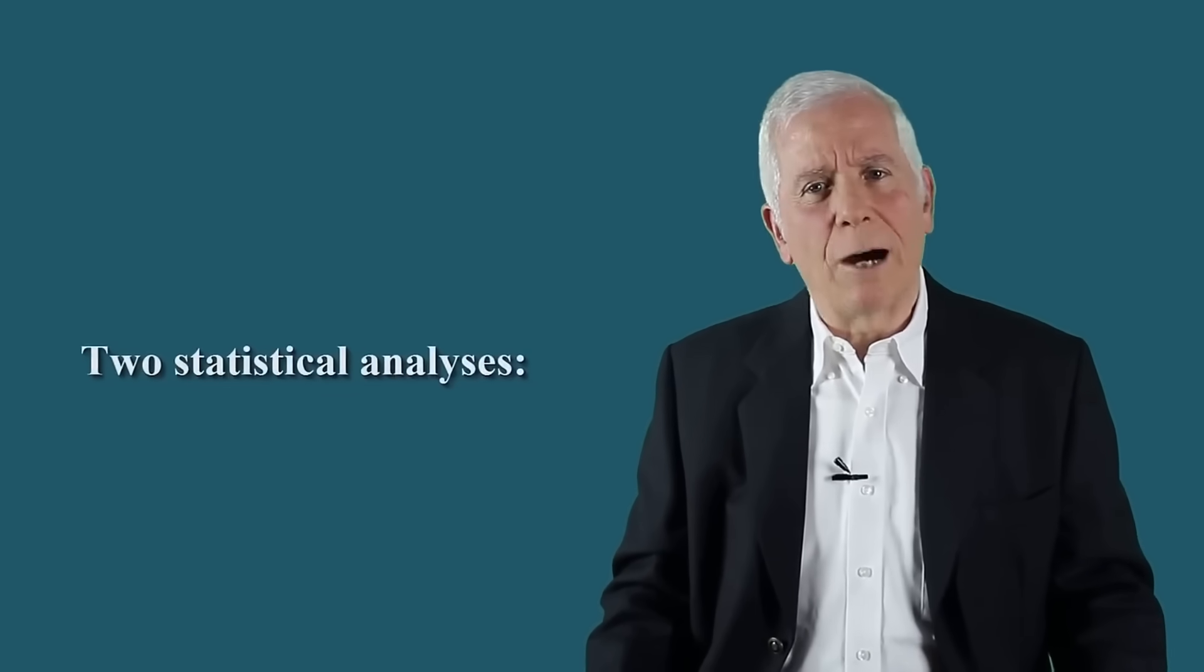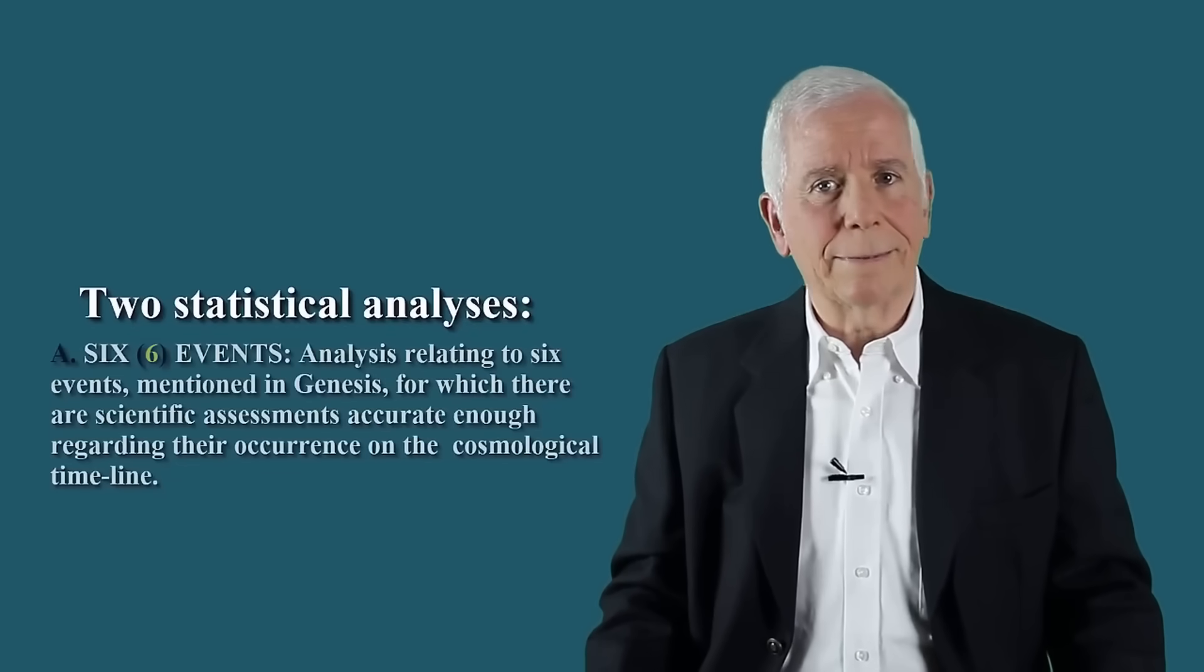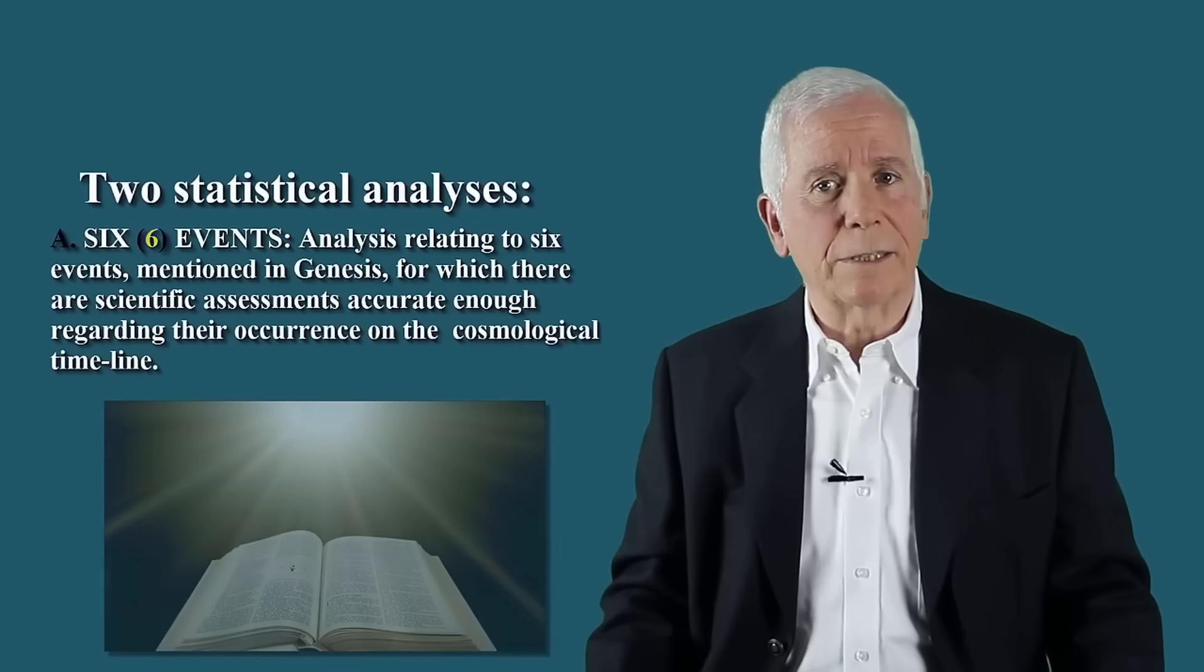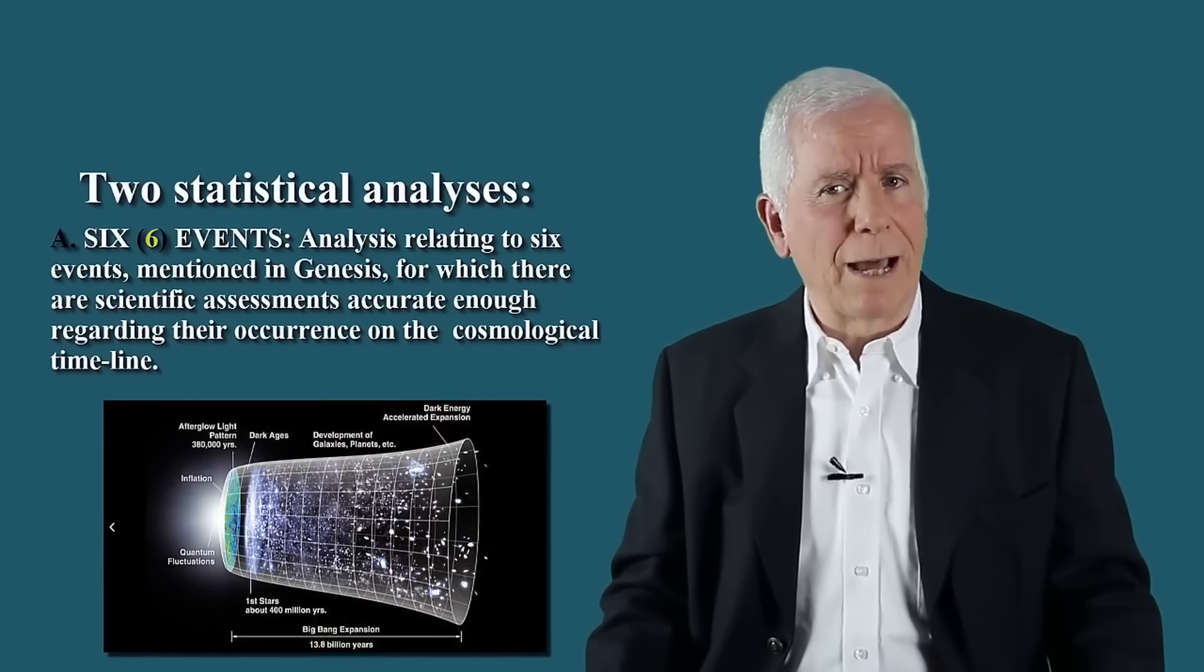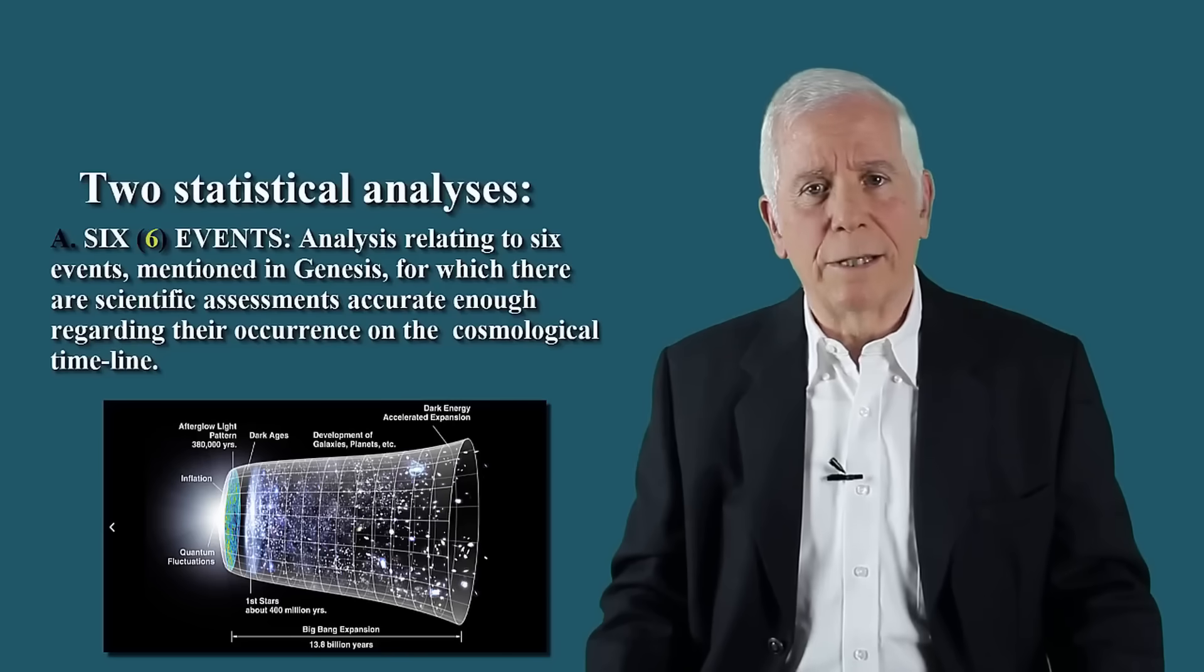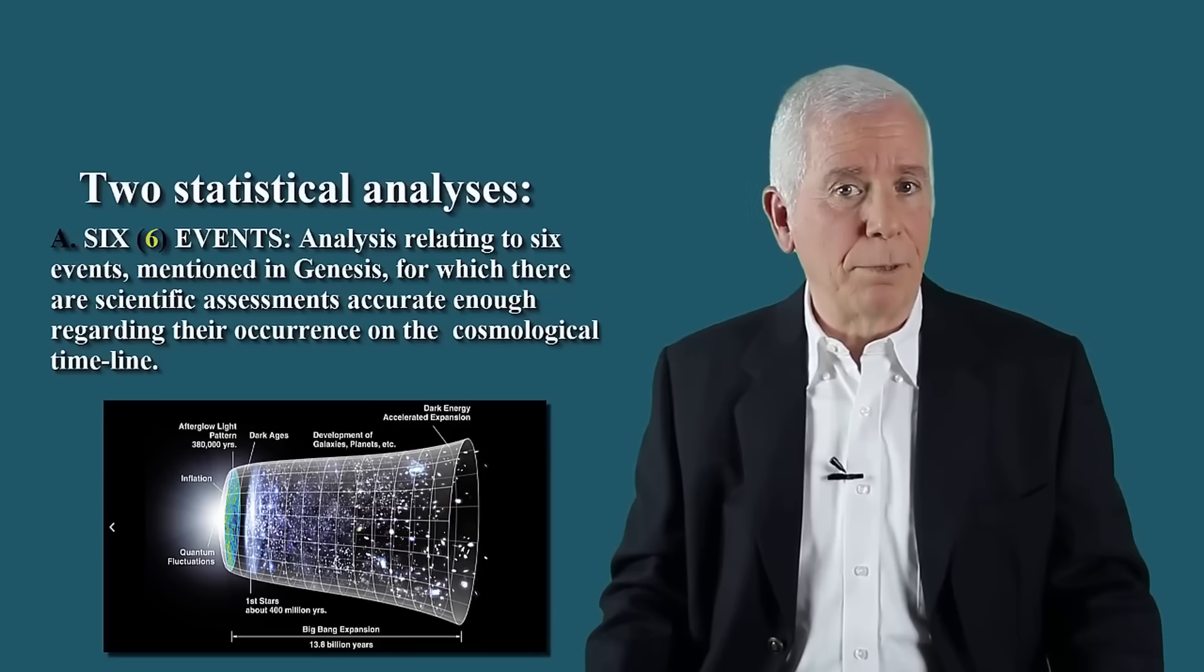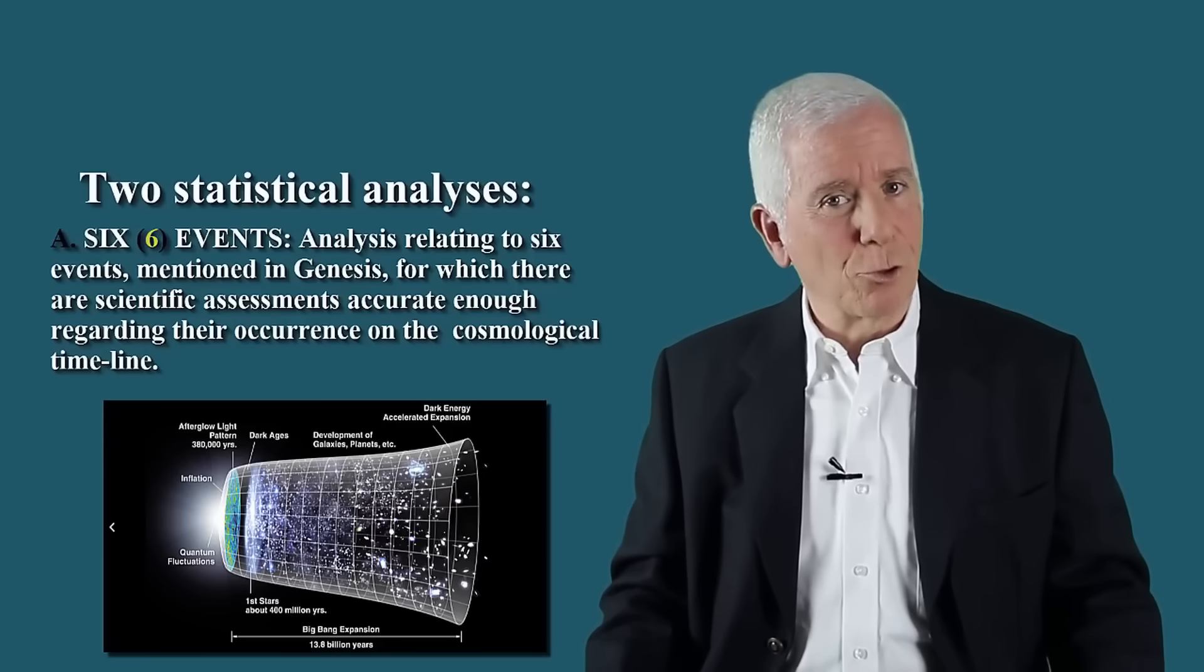Is there a linear relationship between the two axes as in the example of the temperatures? We have carried out two separate statistical analyses. Analysis relating to six different events mentioned in Genesis, for which there are scientific assessments accurate enough regarding their occurrence on the cosmological timeline in terms of billions of years since the Big Bang. A plot of this point is now shown.